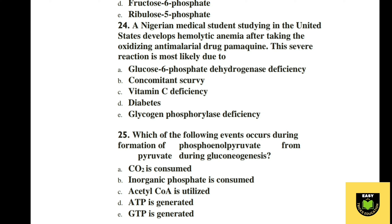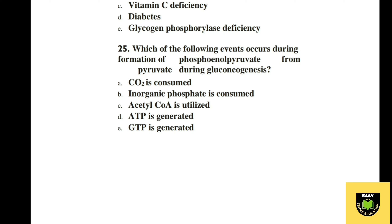Question 24. A Nigerian medical student studying in the United States developed hemolytic anemia after taking the oxidative anti-malarial drug primaquine. This severe reaction is most likely due to: A glucose-6-phosphate dehydrogenase deficiency, B concomitant scurvy, C vitamin C deficiency, D diabetes, E glycogen phosphorylase deficiency. The correct option is A, glucose-6-phosphate dehydrogenase deficiency.